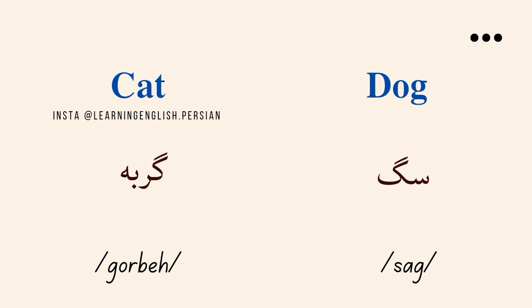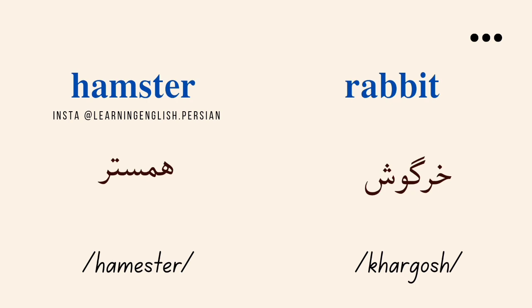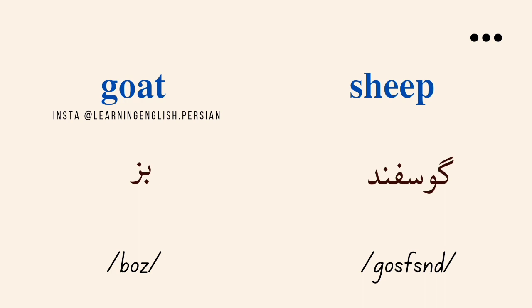Cat. Corb. Dog. Saig. Cow. Gov. Pig. Hamster. Khargoosh. Goat. Boz. Sheep. Goosefant.